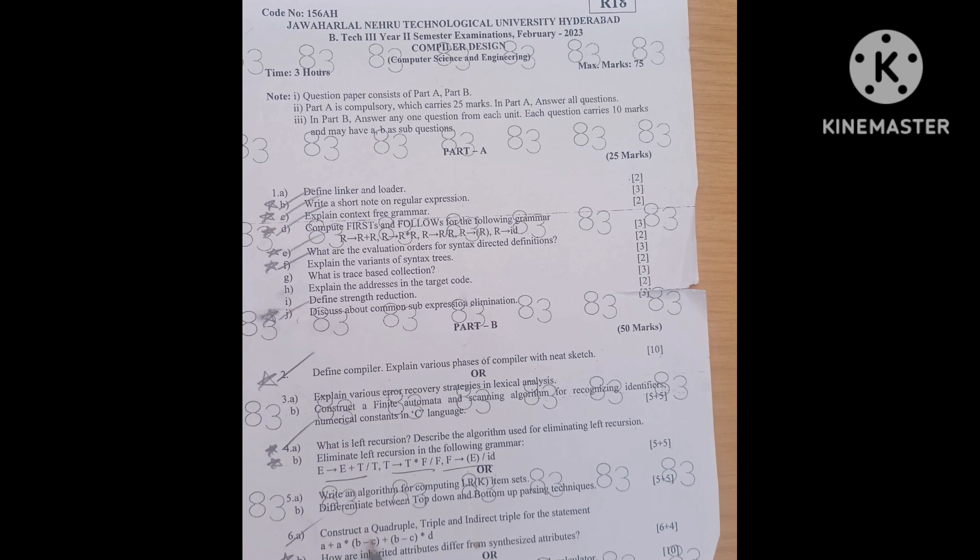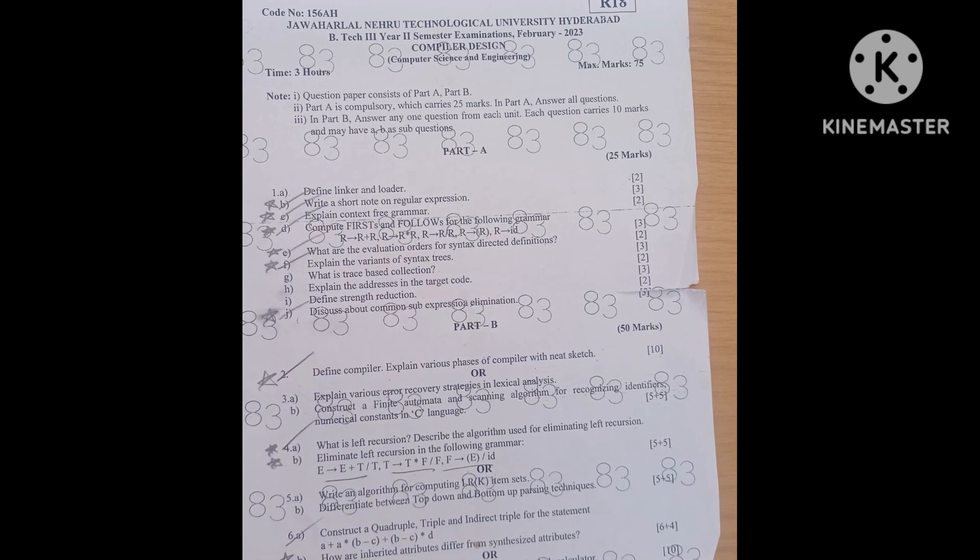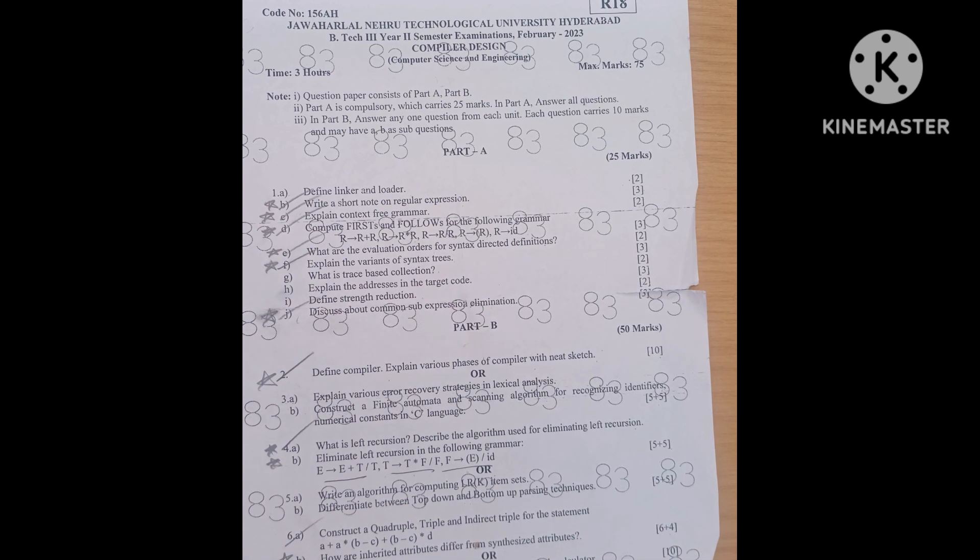Next unit 3. Construct a quadruple, triple and indirect triple for the statement A plus A into B minus C plus B minus C into D. This is also same thing. We can use for any example how to construct these things. We have to learn it. How are inherited attributes differ from synthesized attributes? 4 marks question.